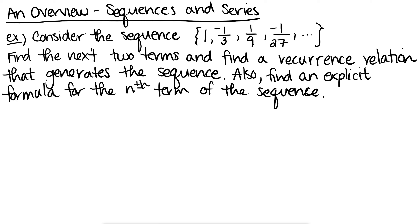So let's look at this first example. We have the sequence: 1, negative 1/3, 1/9, negative 1/27, dot dot dot. We want to find the next two terms of the sequence and then find a recurrence relation that generates the sequence. A recurrence relation is just something that helps us find the next term based on the term before it.